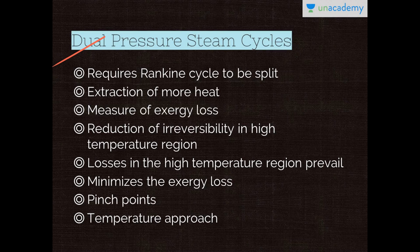Moving on to dual pressure steam cycles. The Rankine cycle is required to be split in order to decrease the irreversibility involved in the heat transfer between the hot exhaust gas and the water or steam. The next figure shows a diagram indicating the heat flow from the flue gas to the water-steam cycle. It can also be seen that more heat can be extracted from the exhaust gas if the steam pressure is lower. The temperature ratio T0/T is actually a function of Q. At high steam pressure, the temperature difference or irreversibility is reduced in the temperature region and the losses are dominant in the lower temperature region.